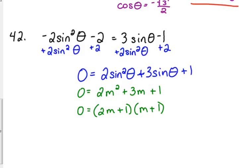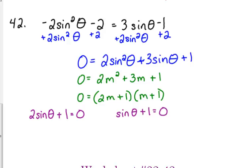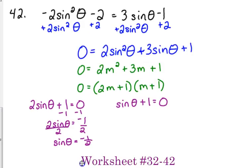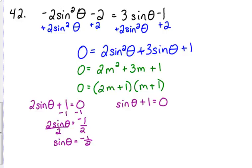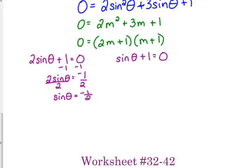When we set the factors equal to zero, we put the trig back in. So we have two sine of theta plus one equals zero, and sine of theta plus one equals zero. Subtracting one and dividing by two: sine equals negative one half. Sine is our y-coordinate — y is negative in the third and fourth quadrants. It's equal to one half at the pi over six angles, so in the third and fourth that is seven pi over six and eleven pi over six.